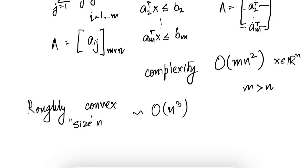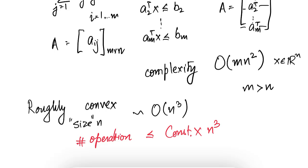This order N³ notation means the number of fundamental operations — addition, subtraction, division, multiplication — is less than or equal to some constant times N³. The constant does not depend on N, but may depend on how accurate the solution is, as well as the problem structure.